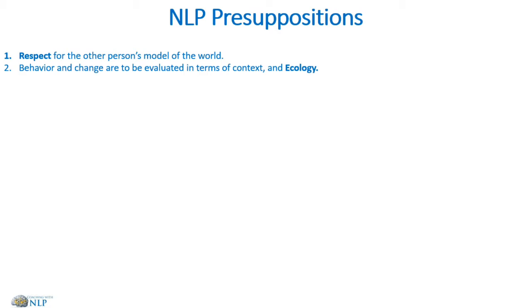The second presupposition: behavior and change are to be evaluated in terms of context and ecology. We want to evaluate whatever the client gives us in terms of the context it occurs in — what's going on around the client — as well as the ecology, meaning what is it that the client is asking us to achieve. For example, if the client says 'I want more energy all of the time,' do you think that might be appropriate?